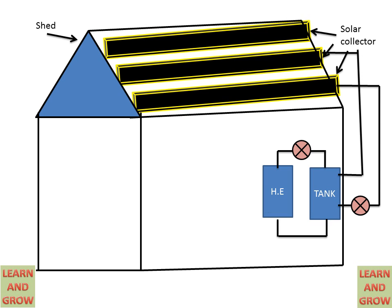The solar collector will collect heat and heat the water at the desired temperature. Then this heated water will go to the storage tank.